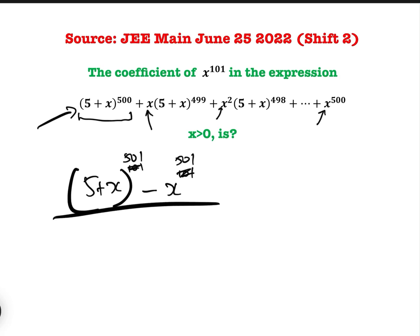Over 5 plus x minus x, which is your x term minus whatever, and that gives us 5 plus x to the 501 minus x to the 501 over 5. And so therefore we need to find the coefficient of x to the 101.